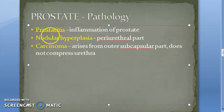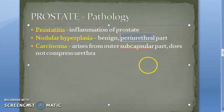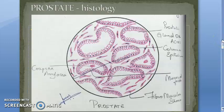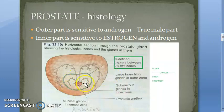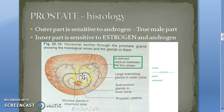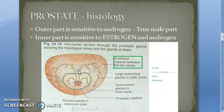Nodular hyperplasia is a benign condition and it occurs in the periurethral part, that is around the prostatic urethra. Because of this location it compresses the prostatic urethra. Carcinoma, on the other hand, occurs in the outer zone and hence there is no significant compression of the urethra.